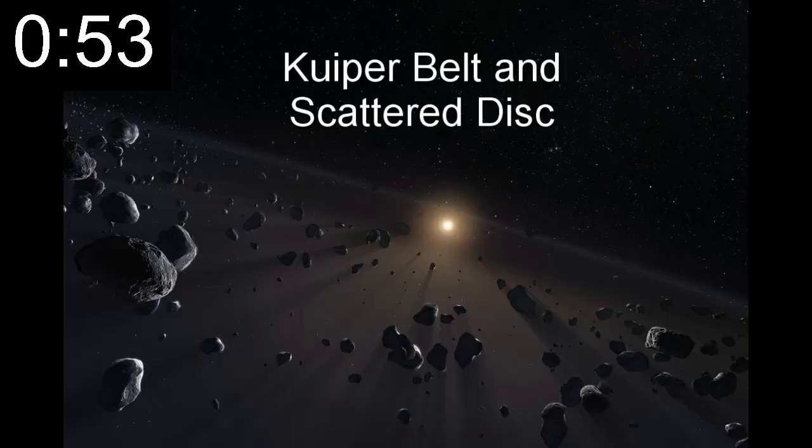Beyond Neptune lies the outer solar system, beginning with the Kuiper belt and the more vast scattered disk, starting at roughly 30 AU. These disks contain icy space material. It's estimated that the dwarf planets, comets — which are frozen asteroids that glow and burn up when they get close to the sun — and other icy particles in these disks combine to less than the Earth's mass.